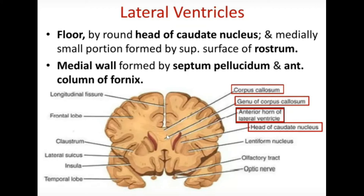You can see the anterior horn is slit-like. It has a roof formed by the corpus callosum, a medial wall, and a floor or lateral wall. The floor is formed by the rounded head of the caudate nucleus. The medial wall is formed by the septum pellucidum and the anterior column of the fornix — the anterior column of the fornix and the septum pellucidum together form the medial wall.